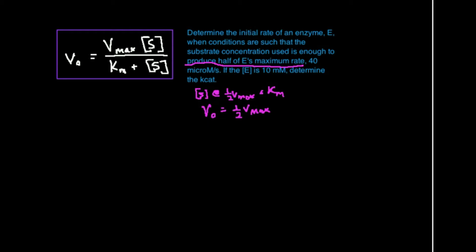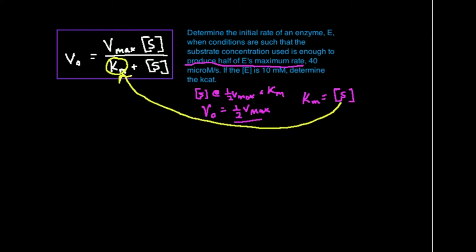The other thing that's really important is that the Km, in this case, because we're dealing with half of the Vmax, the Km is going to be equal to the substrate concentration. I can go about this a number of ways and get the same answer — I can either substitute Km in for S, or substitute S in for Km. I'm going to choose to substitute the substrate concentration in for Km, because I'm told we're at half of the enzyme's maximum rate, and so by definition the Km at that point equals the substrate concentration.